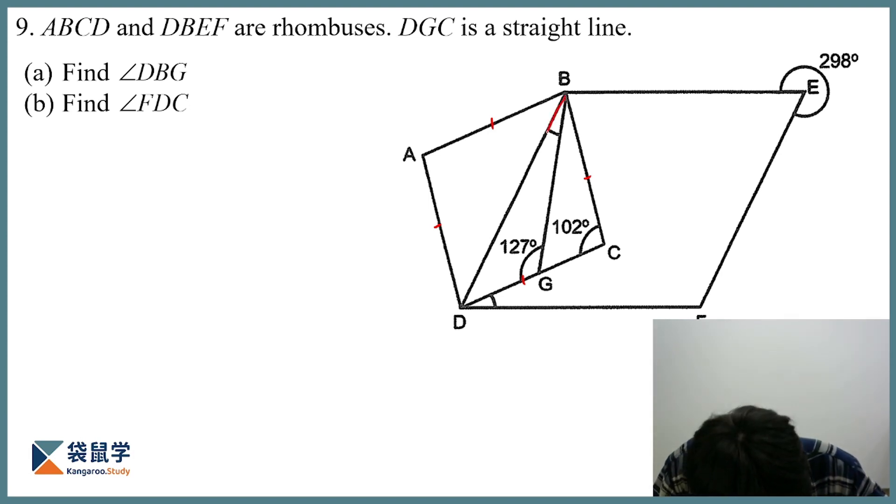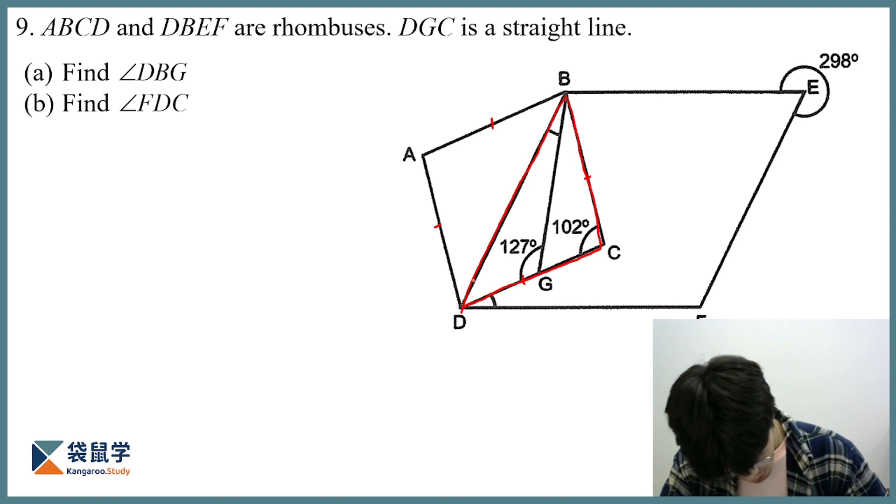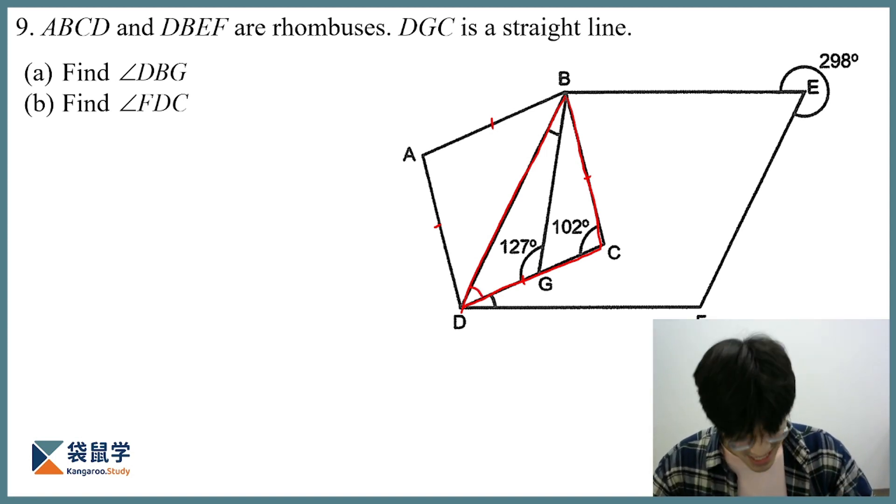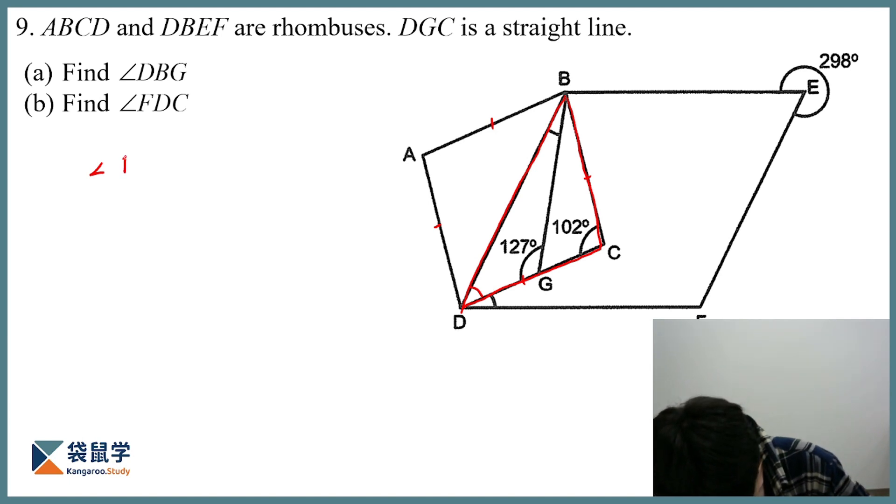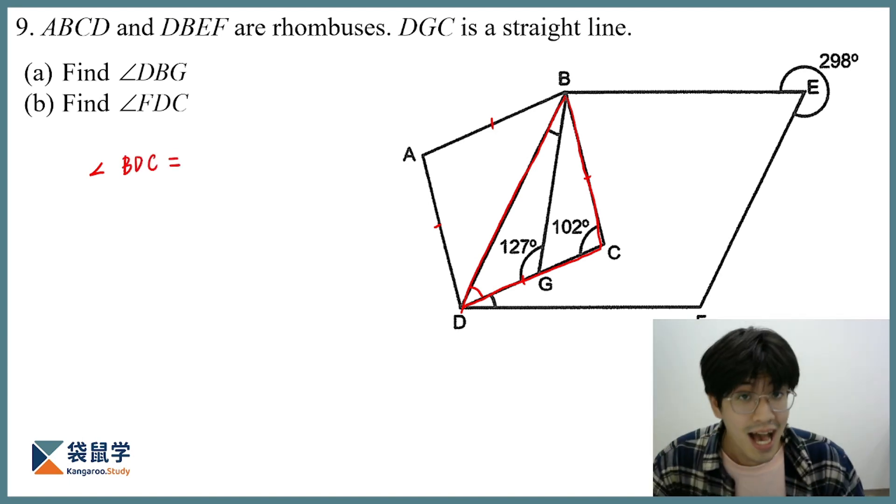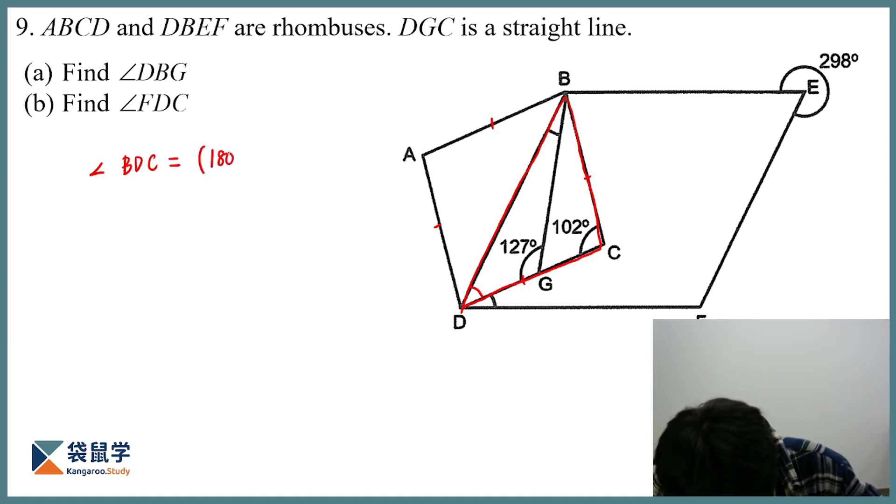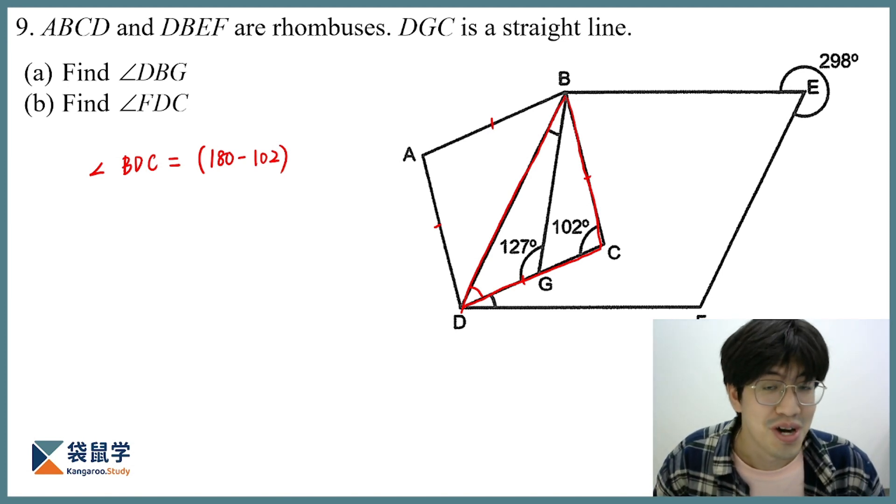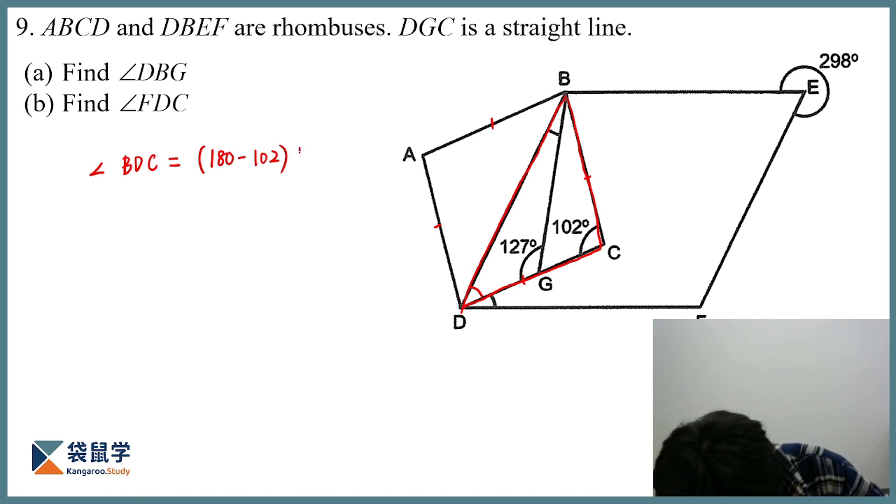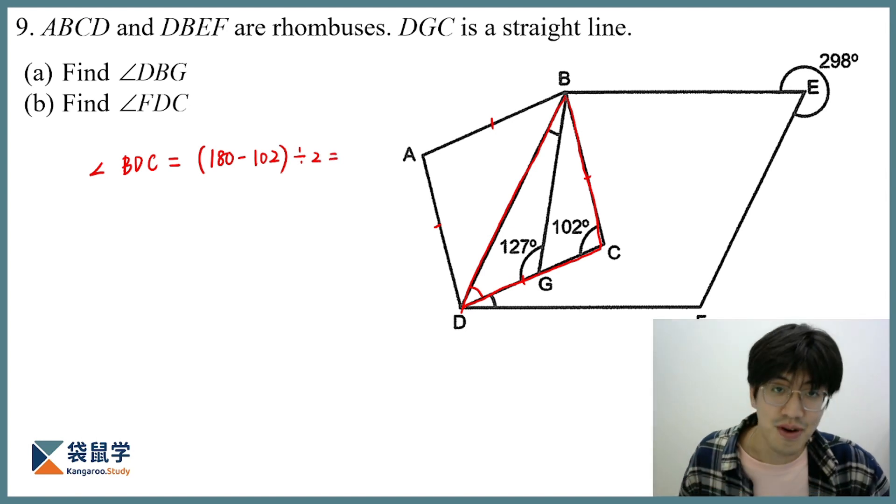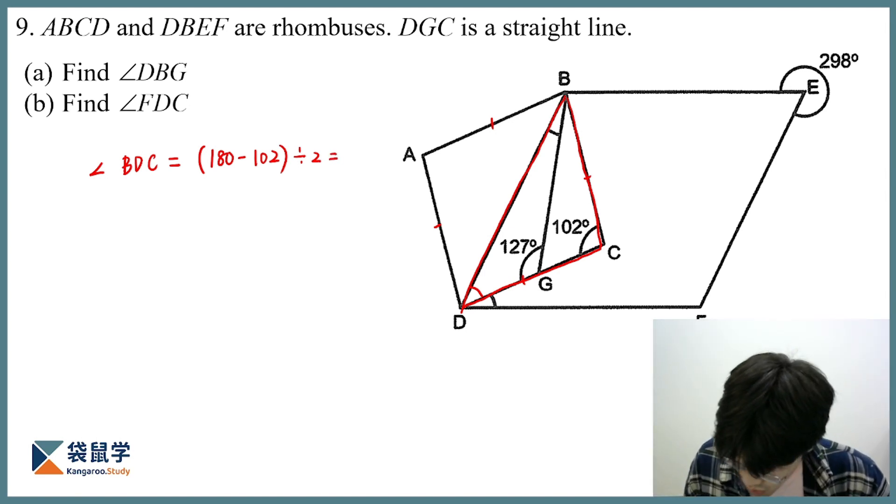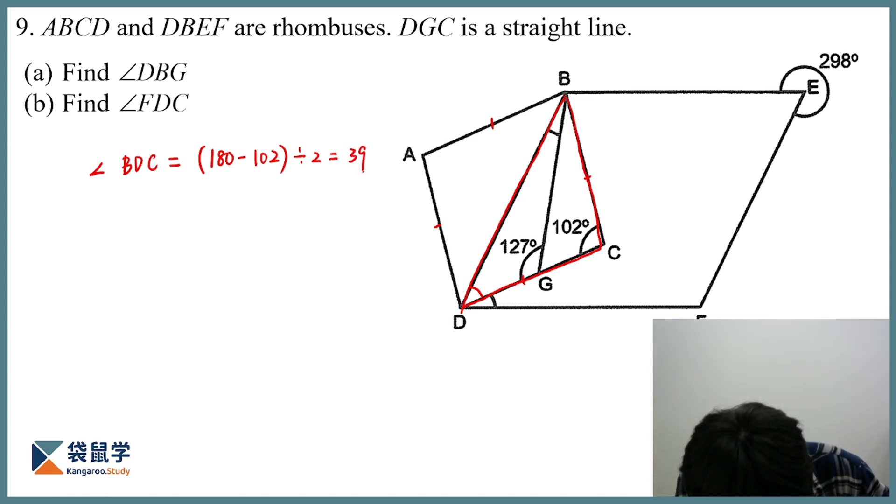So now, we have BDC as an isosceles triangle. So what can we get from here? Well, I can get this base angle. Let me write it out. Angle BDC to be simply 180 minus 102, and then divided by two, because the base angles are the same. And in this case, what I will get, 180 minus 102, then I will get 39. So that tells me this angle.